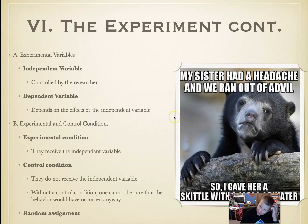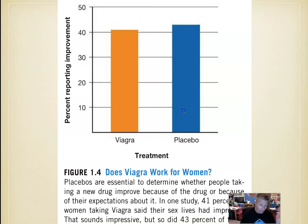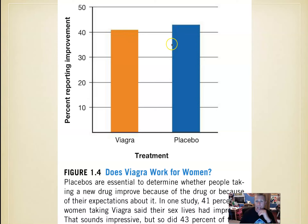There's a meme here: 'My sister had a headache when we ran out of Advil, so I gave her a Skittle with a glass of water, and it probably worked.' There was also a study about Viagra working on women — they found it worked for 41% of women, but the placebo worked better than Viagra. It was the mental aspect of believing they were getting help that was stimulating their love lives.